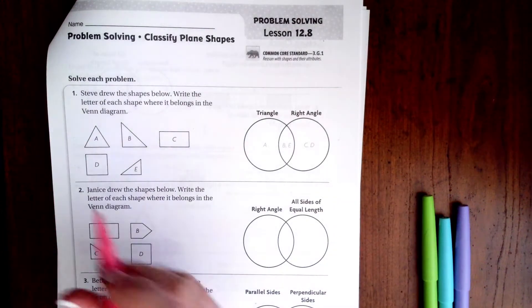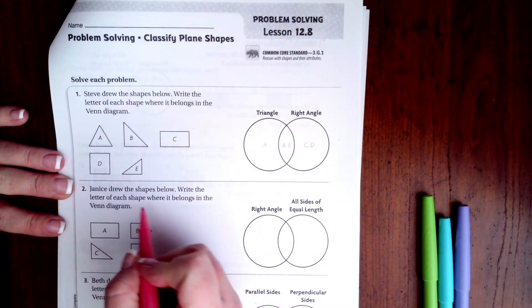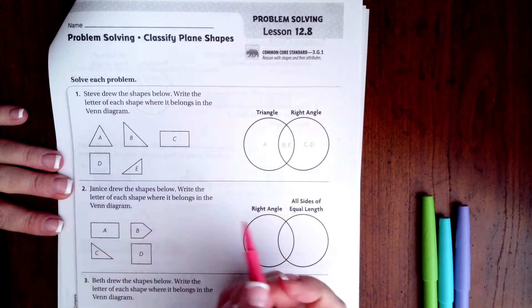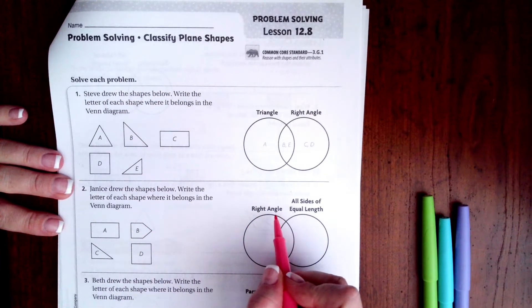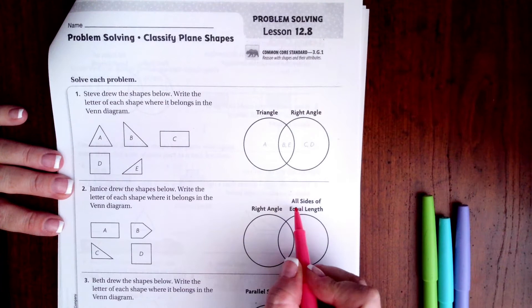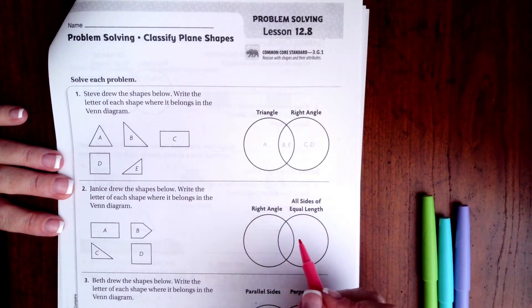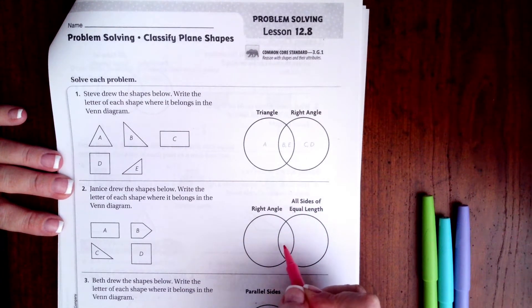We're going to get started. Janice drew the shapes below. Write the letter of each shape where it belongs in the Venn diagram. The ones that have a right angle go right here. The ones that have all sides of equal length go over here. And the ones that have both go in the middle.